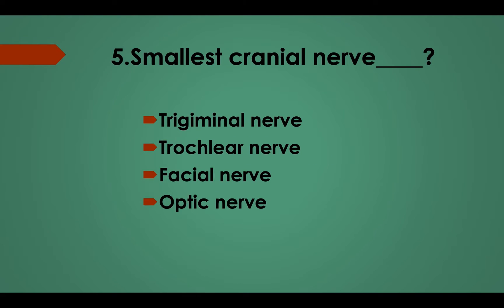Fifth question: What is the smallest cranial nerve? Option A, Trigeminal nerve; Option B, Trochlear nerve; Option C, Facial nerve; Option D, Optic nerve. Answer: Option B, Trochlear nerve.